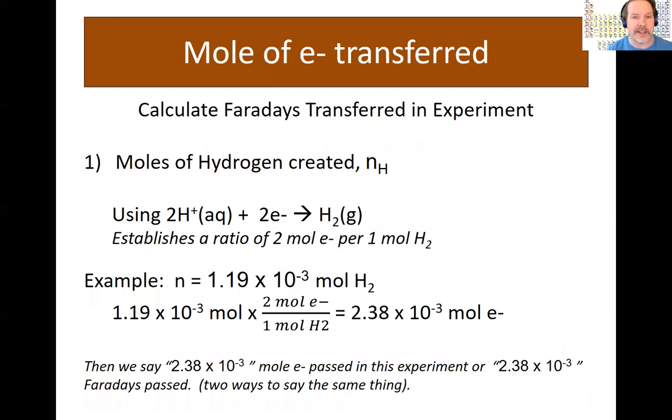Alright, so first things first. Let's say you've got the moles of hydrogen. Now in this experiment, two moles of hydrogen ions were reduced. They gained two electrons to make one mole of hydrogen. What you calculated was the moles of hydrogen gas, H2. So using the stoichiometry of the chemical reaction, we can then use the one to two mole ratio of the moles of hydrogen, multiply by this stoichiometric ratio to figure out the moles of electrons.